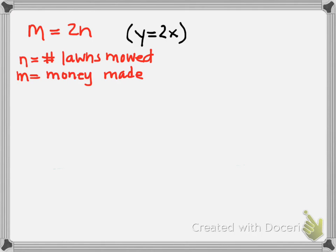So in our scenario here, n is going to represent the number of lawns mowed and m is going to represent the money made. The number of lawns that are mowed is called an independent variable.